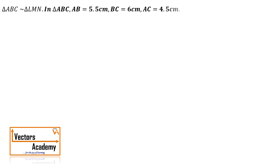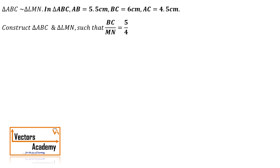We have two triangles ABC and LMN which are similar to each other. The information about triangle ABC is given — all three sides of ABC are given to us — and we have to draw both the triangles where the ratio of the sides, that is BC upon MN, is given as 5 by 4.